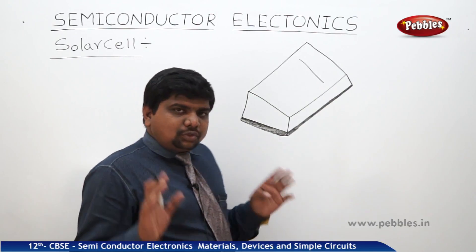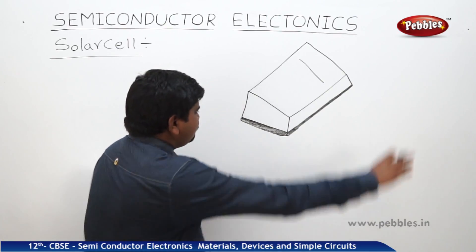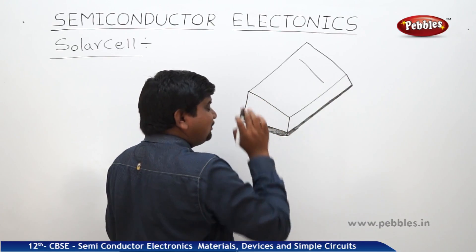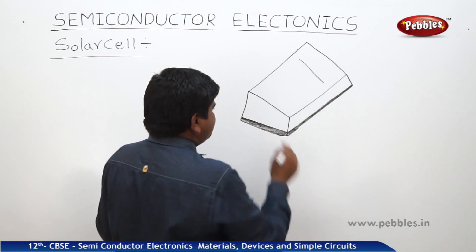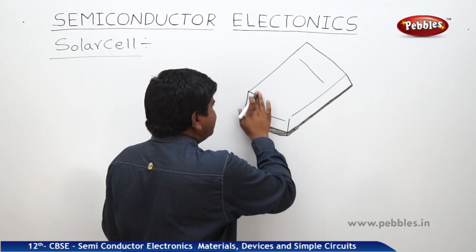So, it is a two semiconductors combination n-type and p-type. The lower side is p-type and the upper side is n-type. So, we can find out the separate wall like this.